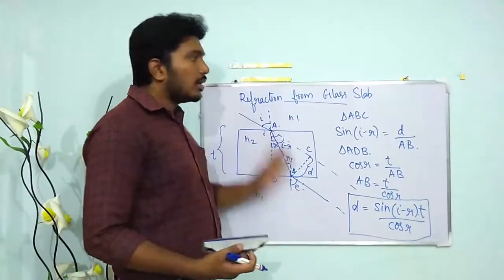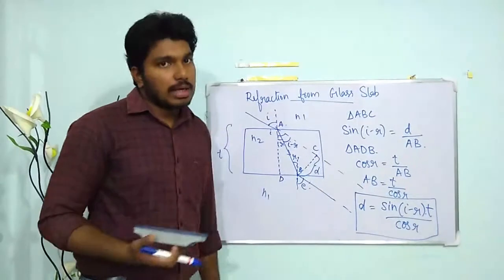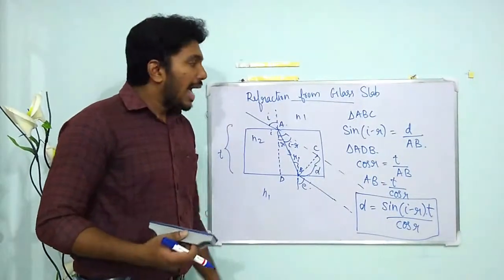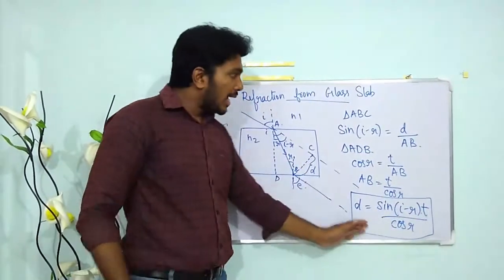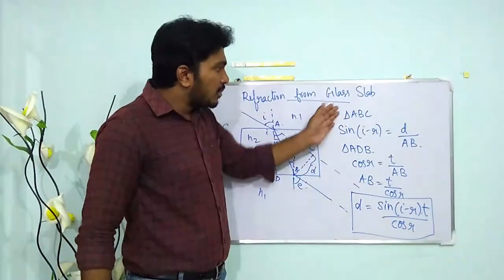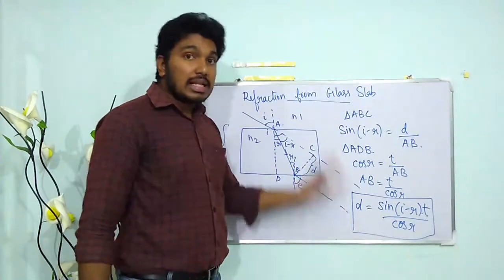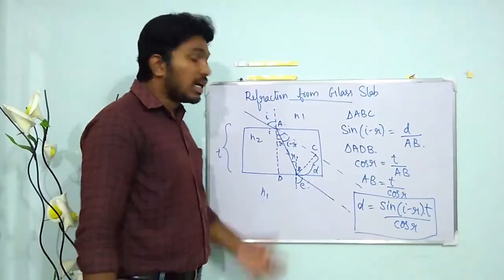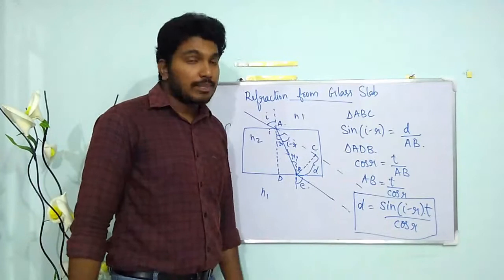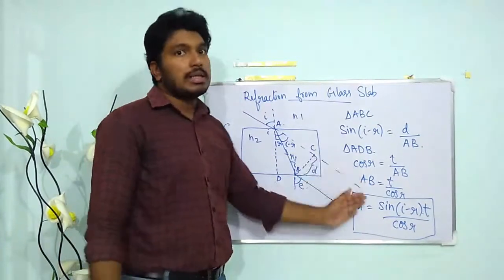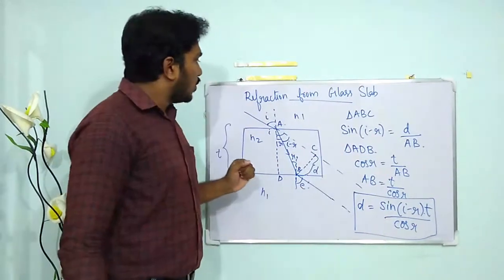So the lateral displacement or lateral shift is given by d = sin(i − r) · t / cos r. Please remember that equation — it will come in handy. I have taught you the full method so that if any variation is asked in a question, you can derive it yourself.